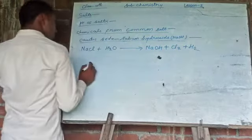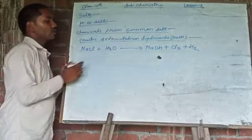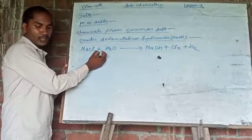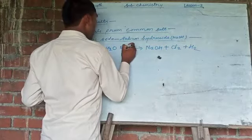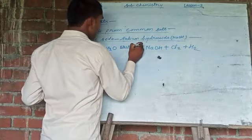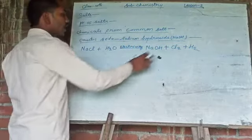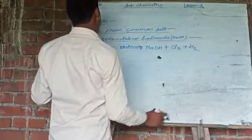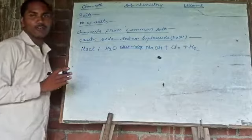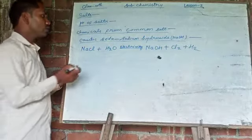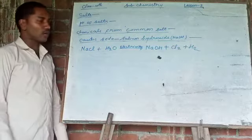When sodium chloride is dissolved in water and electrolysis is carried out, electricity is passed through it, it will form sodium hydroxide, chlorine gas, and hydrogen gas. This way we can prepare sodium hydroxide using common salt, sodium chloride.